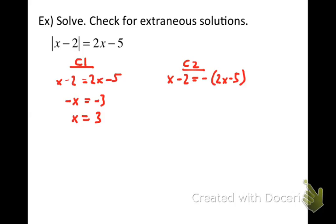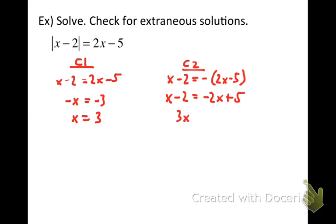For Case 2, simplify the right side using the distributive property: x minus 2 equals negative 2x plus 5. Then bring variables to the left and constants to the right — add 2x, giving 3x on the left. Add 2 to both sides: 5 plus 2 is 7. So x equals 7 thirds.